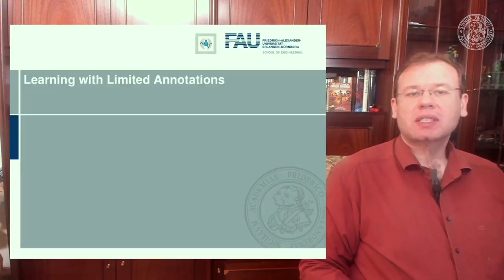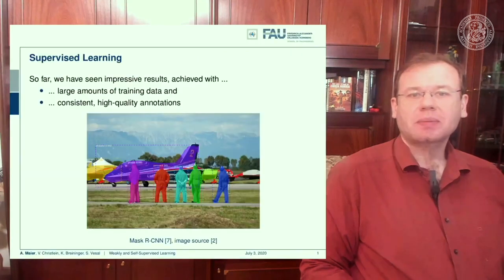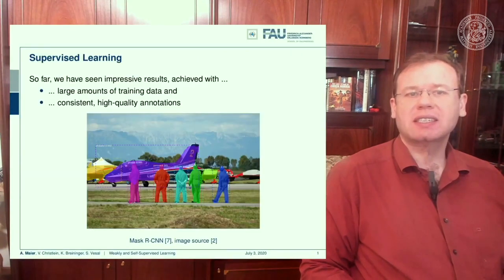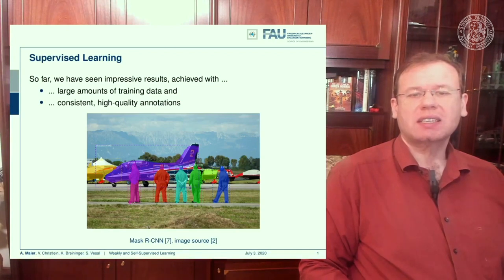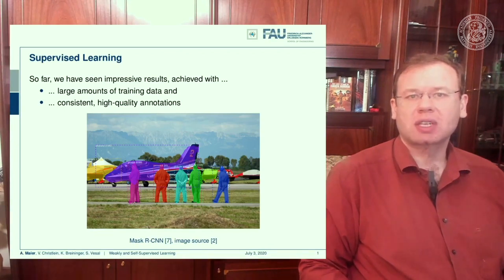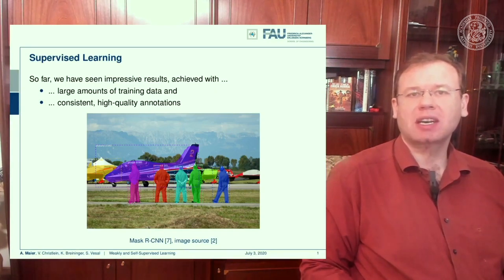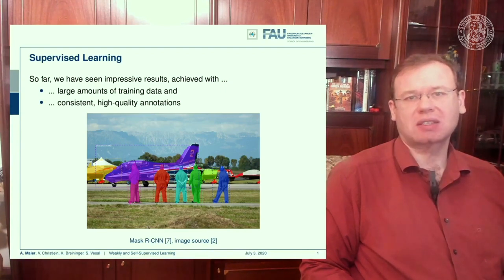So what's the problem with learning with limited annotations? So far we had supervised learning and we've seen impressive results achieved with large amounts of training data and consistent high-quality annotations. We had annotations for instance-based segmentation, simply assuming that all of these annotations are there and we can use them — maybe even publicly available. But actually, that's in most cases not true.